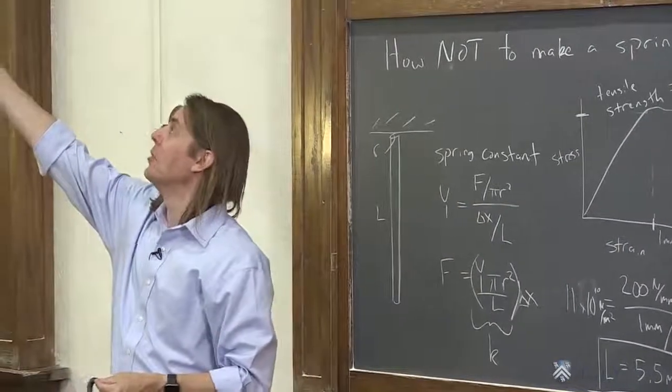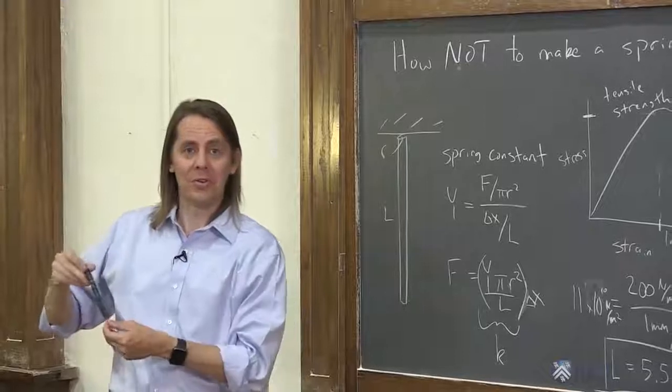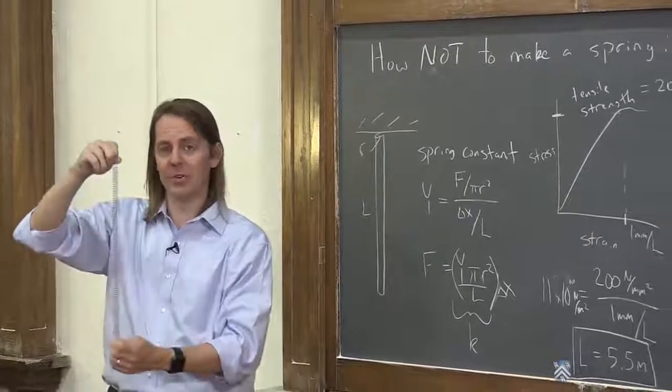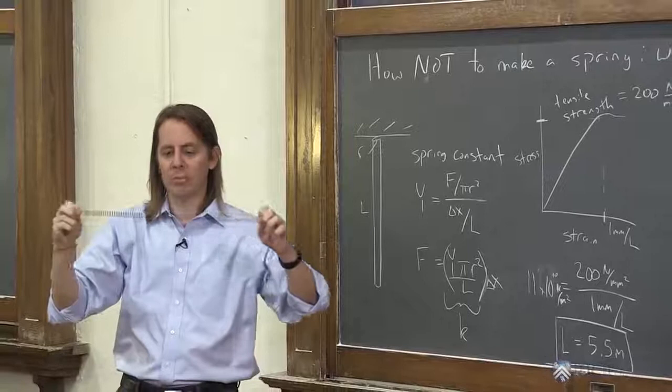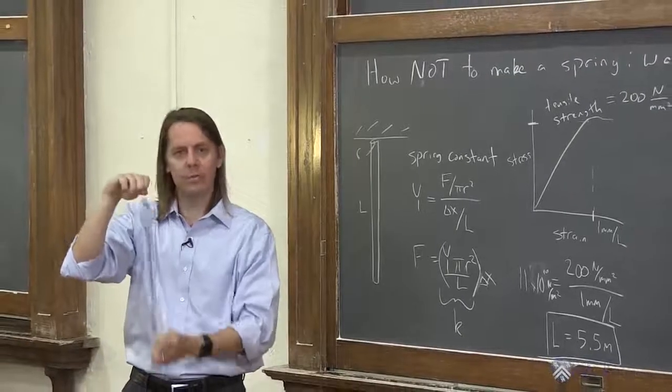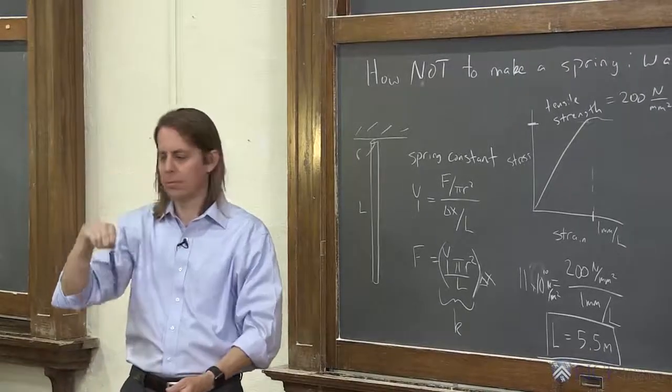Whereas over here, we can only move 0.1% or something like that, a fraction of a percent. Here we can double the length. So if you ever wondered why springs are shaped like this, this is the reason.